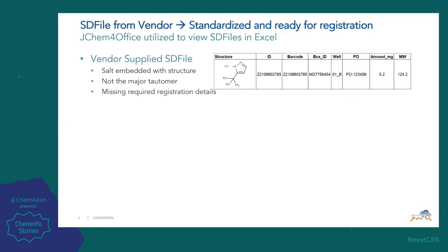Here's an example of an SD file from a vendor. This picture was taken using JChem for Office, which I use often when I want to physically look at SD files and the content within. Here's a picture of opening up a raw file from the vendor. Notice how the structure has the salt drawn with the structure — here's the HCl with the structure. Also the structure is not in the major tautomer form. In addition, all of the headers used to describe the content below do not match what we have in our database, so we need to make some changes.